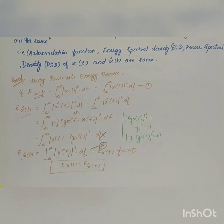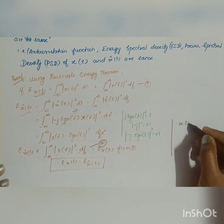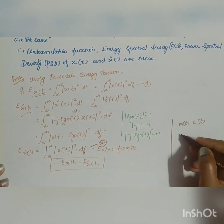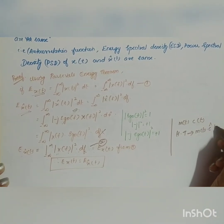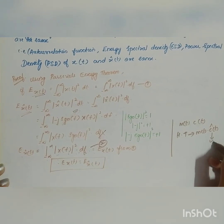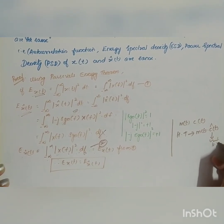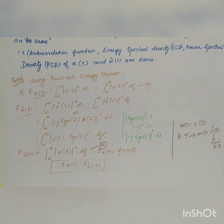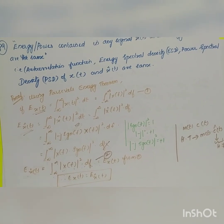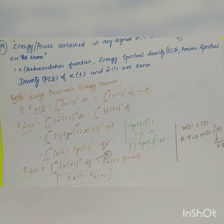One more property: the Hilbert transform does not act on low-frequency signals. For example, if we have a low-frequency signal m(t) and a high-frequency signal c(t), applying the Hilbert transform gives m(t)·ĉ(t) — the Hilbert transform is only applied to the high-frequency signal, not to the low-frequency signal. These are the important properties of the Hilbert transform. In the next video, we will see the different applications and numericals of the Hilbert transform.